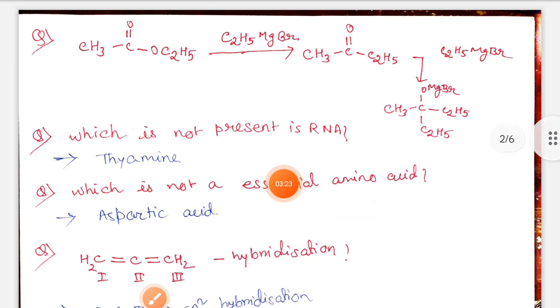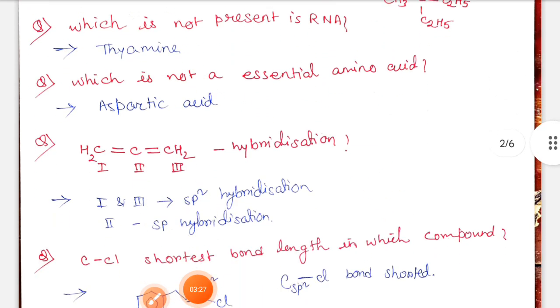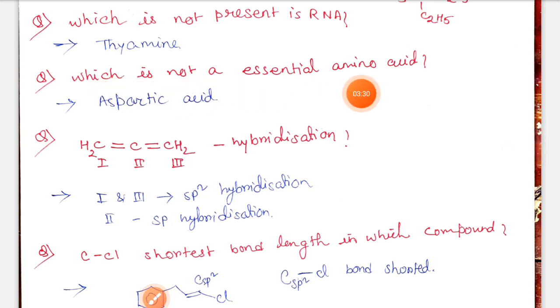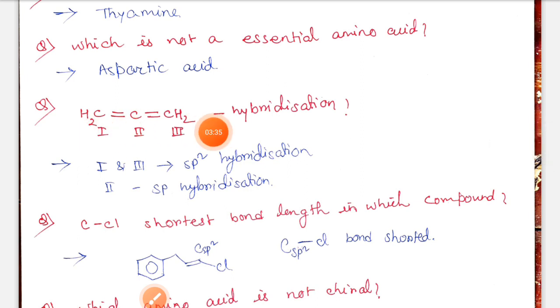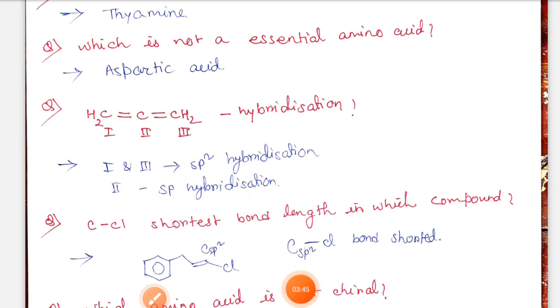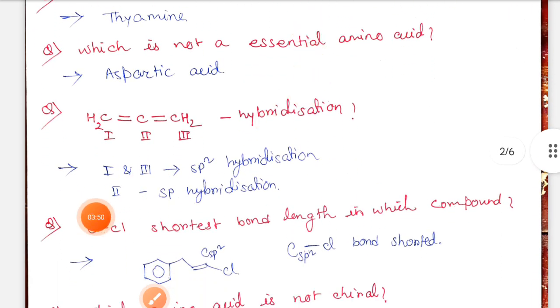Next, which is not present in RNA? That is thymine. Which is not an essential amino acid? That is aspartic acid. Next, in allene system, the hybridization of carbons 1 and 3 is sp2, and carbon 2 is sp hybridized.